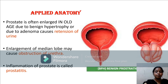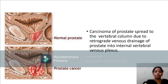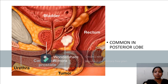Applied aspects: the prostate is often enlarged in old age due to hypertrophy, causing retention of urine due to obstruction of the prostatic urethra. Inflammation of the prostate is called prostatitis. Removal of the prostate is called prostatectomy, which may be done via transurethral or retropubic approach — the procedure is called TURP, transurethral resection of prostate. Carcinoma of the prostate spreads to the vertebral column due to retrograde venous drainage into the internal vertebral venous plexus via Batson's plexus. Prostatic carcinoma is more common in the posterior lobe.